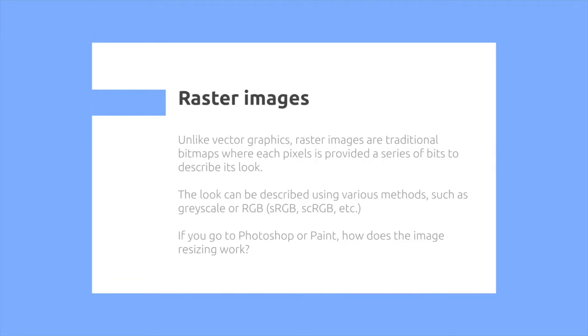So raster images, unlike vector graphics, provide a bitmap, where each pixel is provided a series of bits to describe its look. The look can be described using various methods, but there's typically grayscale or RGB.